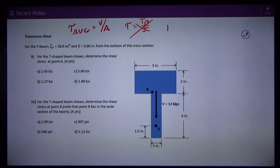The third one is tau equals VQ over IT, and that's actually titled transverse shear. So that's the equation that we want.